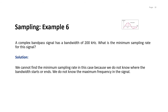For a complex band-pass signal with a bandwidth of 200 kHz, we cannot find the minimum sampling rate because we do not know where the bandwidth starts or ends — we don't know the maximum frequency. So if you are given only the bandwidth of a band-pass signal, you need additional information — either the initial frequency or the maximum frequency. If you have the maximum frequency, then you can calculate the minimum sampling rate.